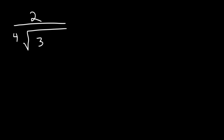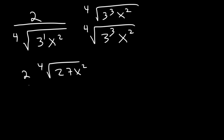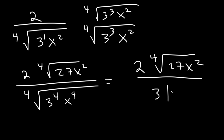What about this one: 1 over 2 times the 4th root of 3x squared? We need a total of four 3s and four x's on the bottom. So we need to multiply by the 4th root of 3 to the 3rd — since 1 plus 3 is 4 — and x squared. 3 to the 3rd is 27. On the bottom we get four 3s and four x values. So the final answer is 2 times the 4th root of 27x squared, divided by 4x, where x is inside an absolute value.